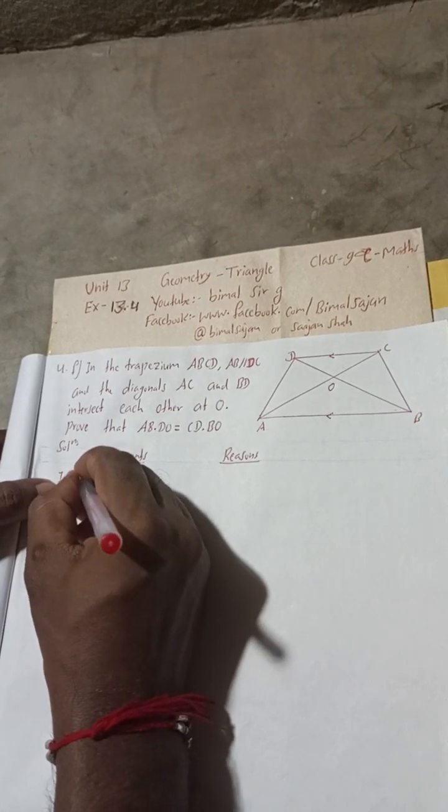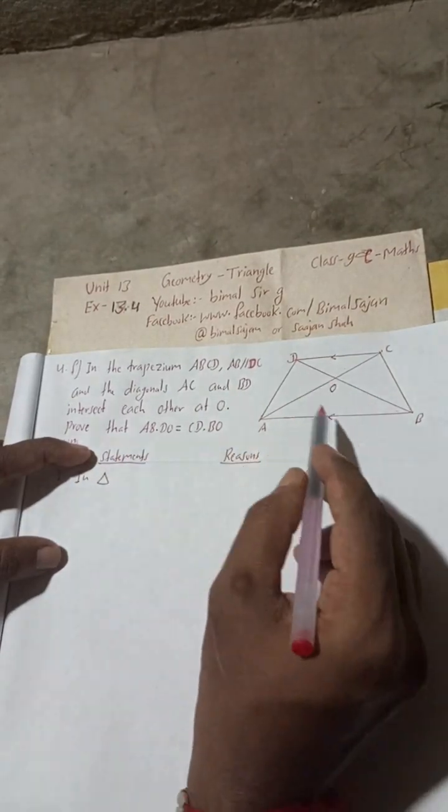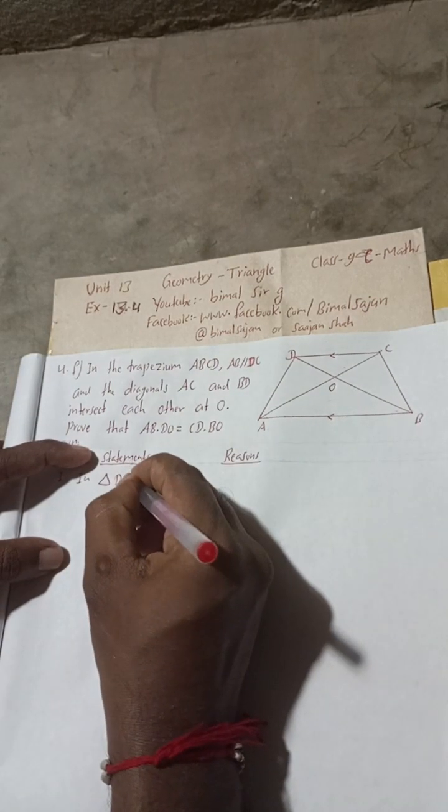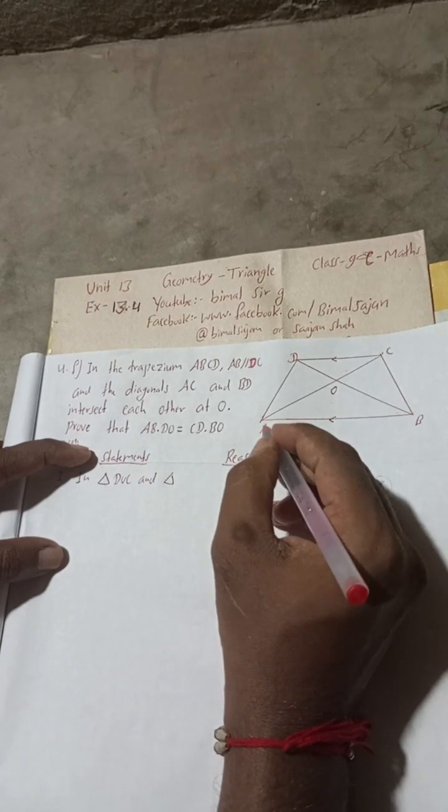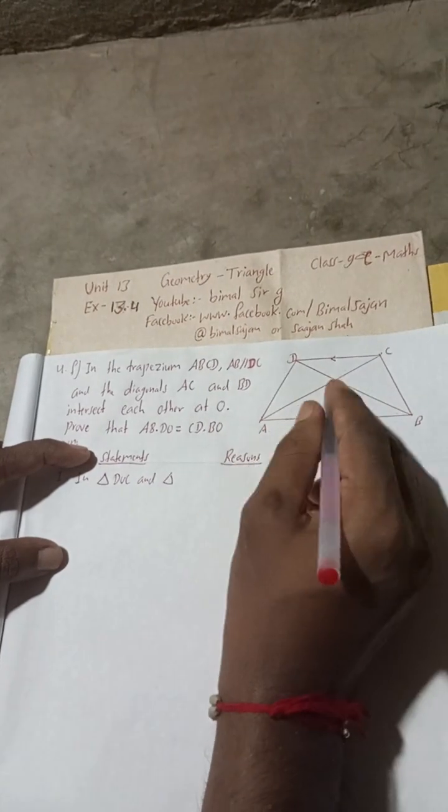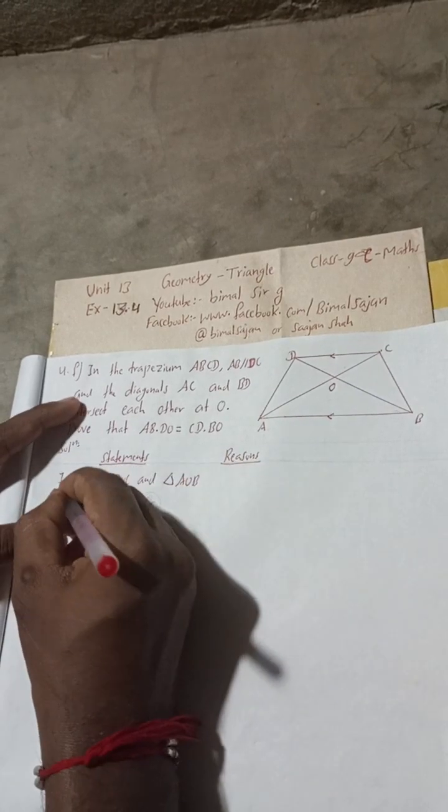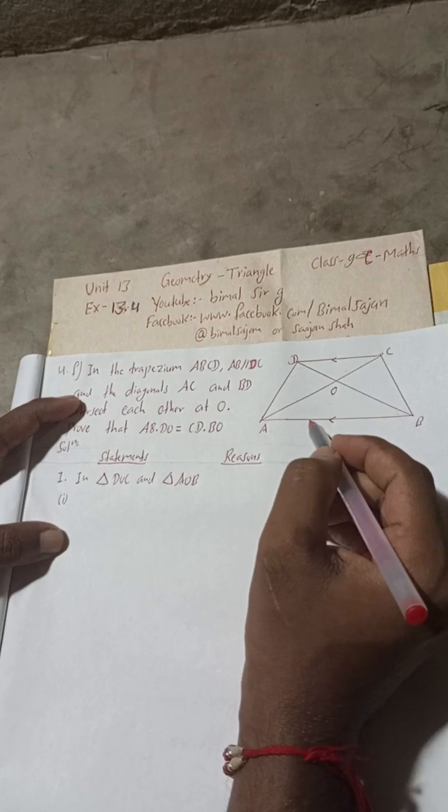Statement number one: in triangle DOC and triangle AOB. To show the similar, what we have to do? We have to show that three angles are equal. For that, suppose this and this is parallel, so this angle is equal to this angle.